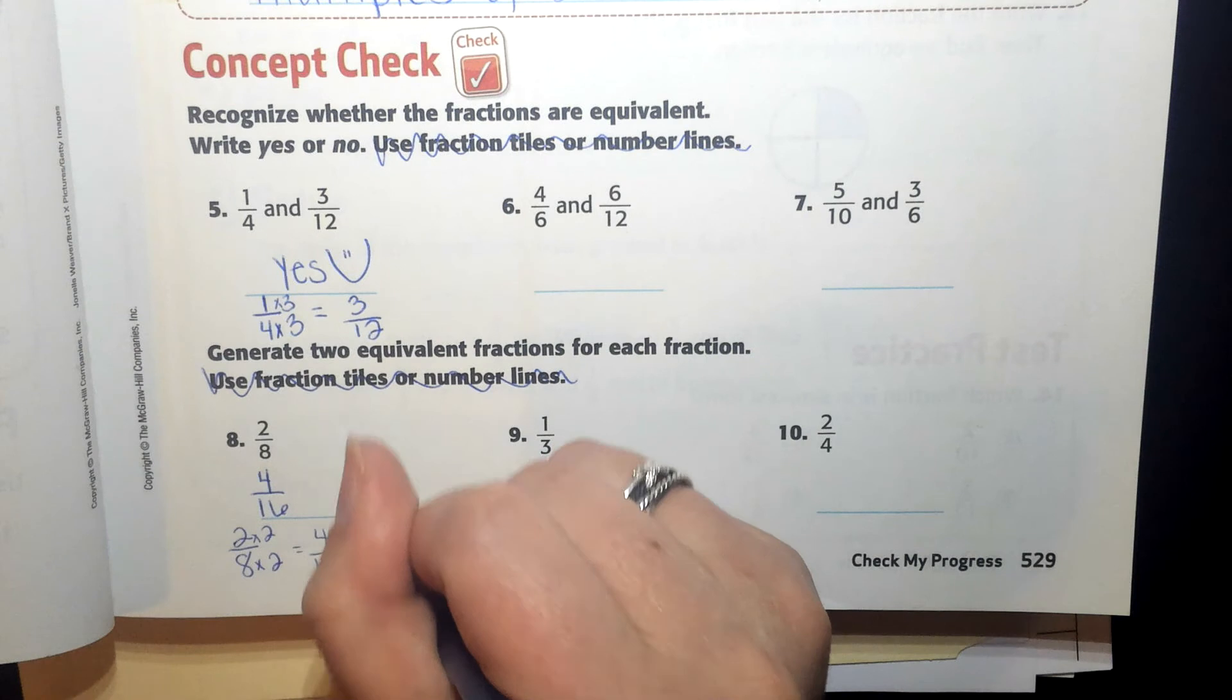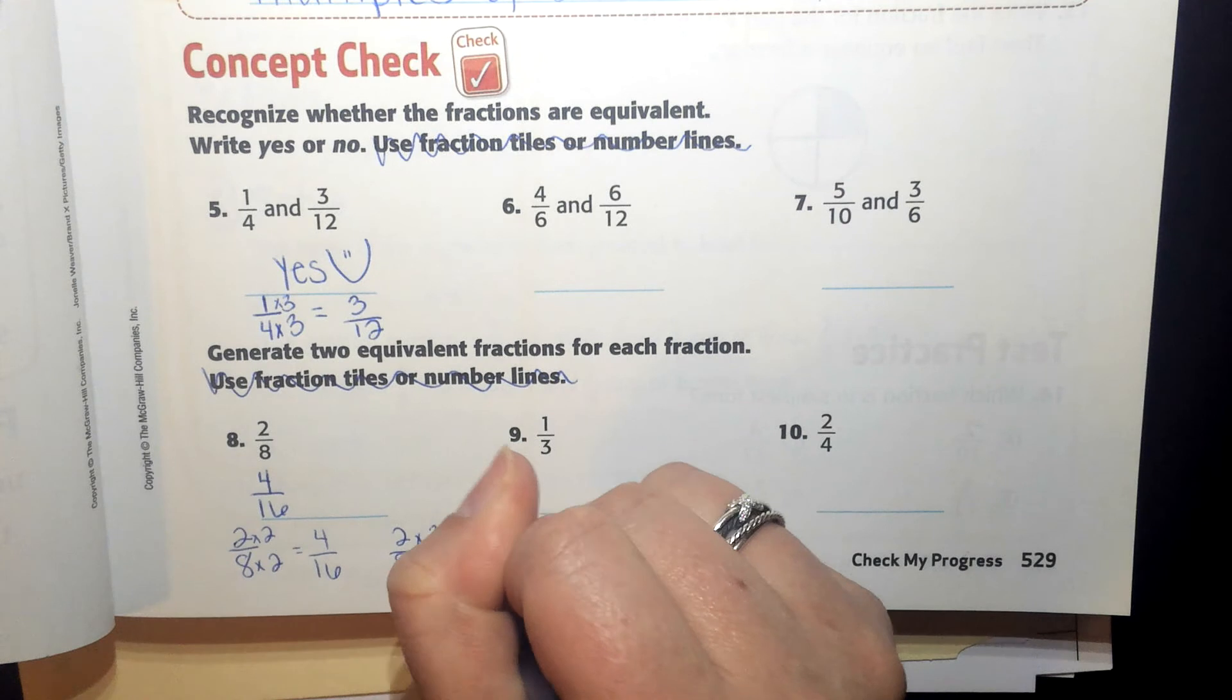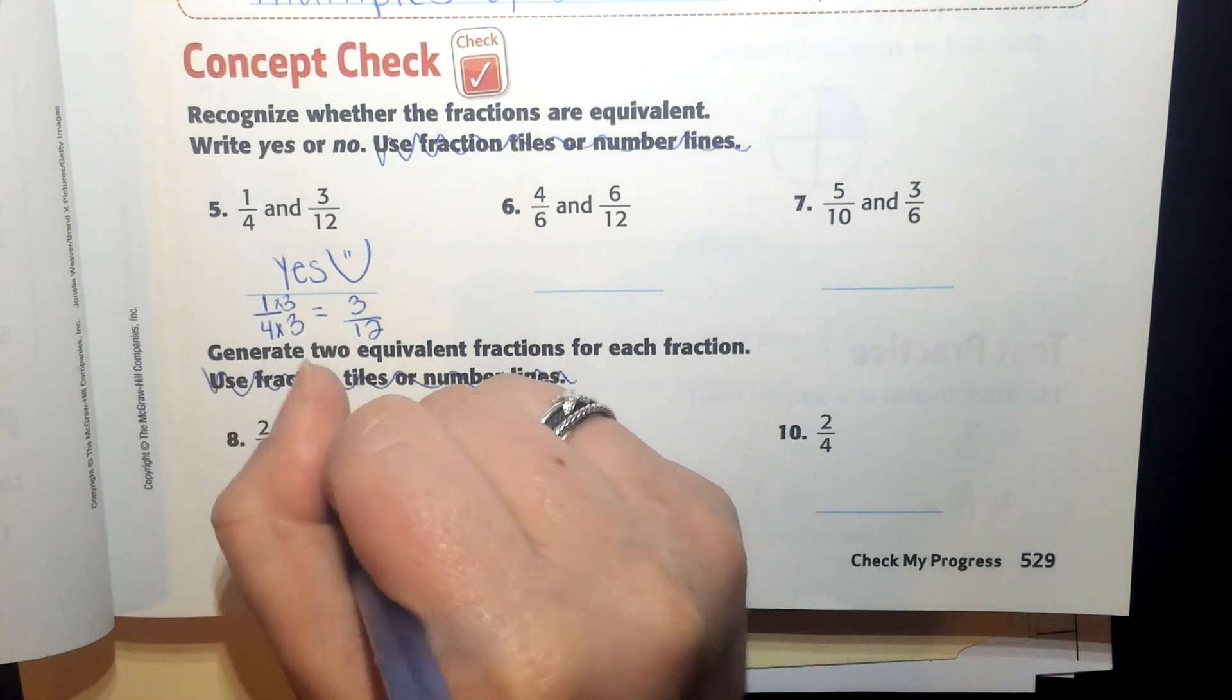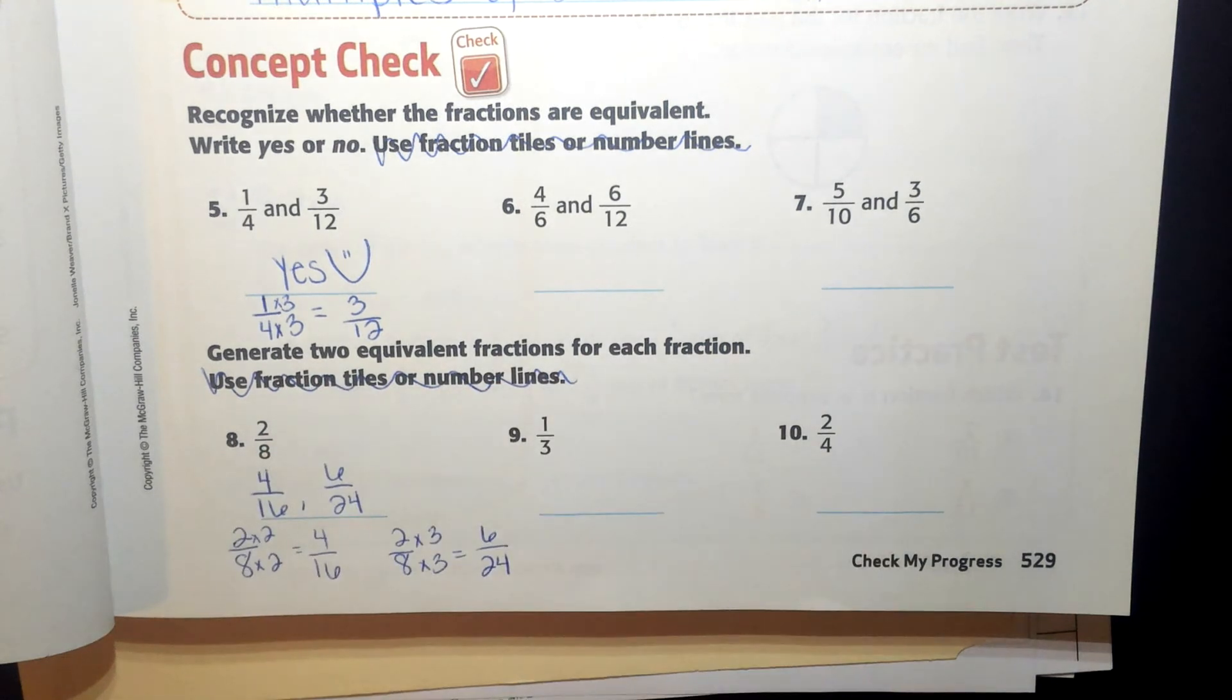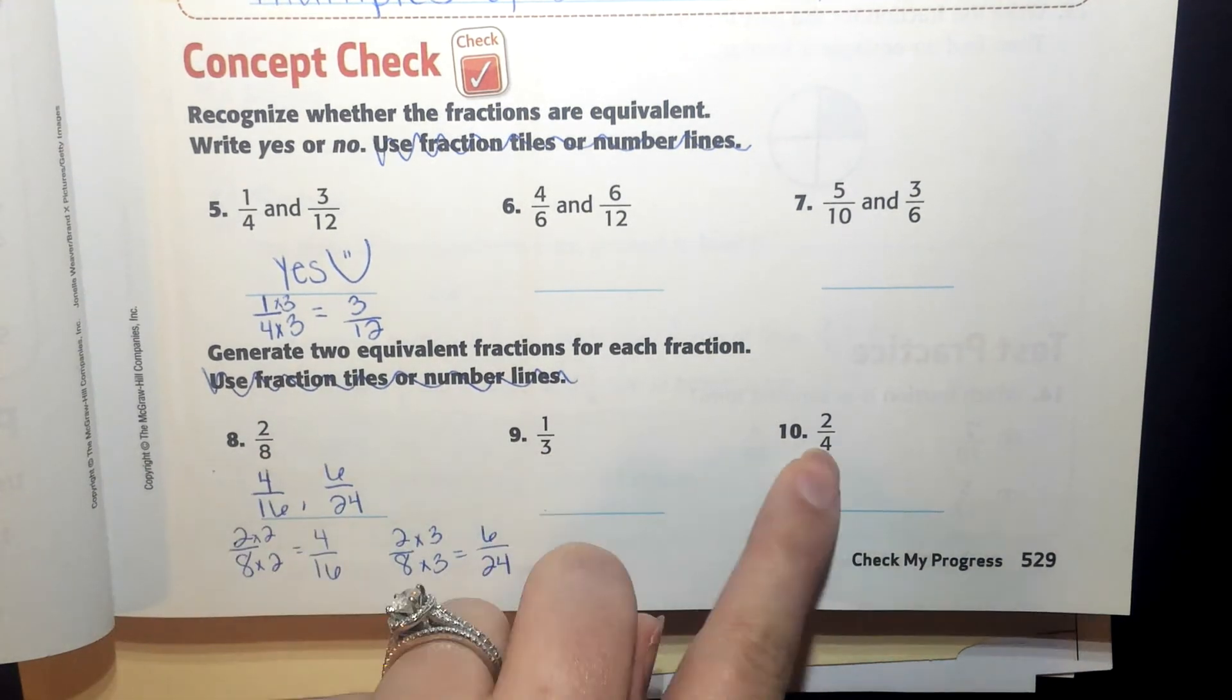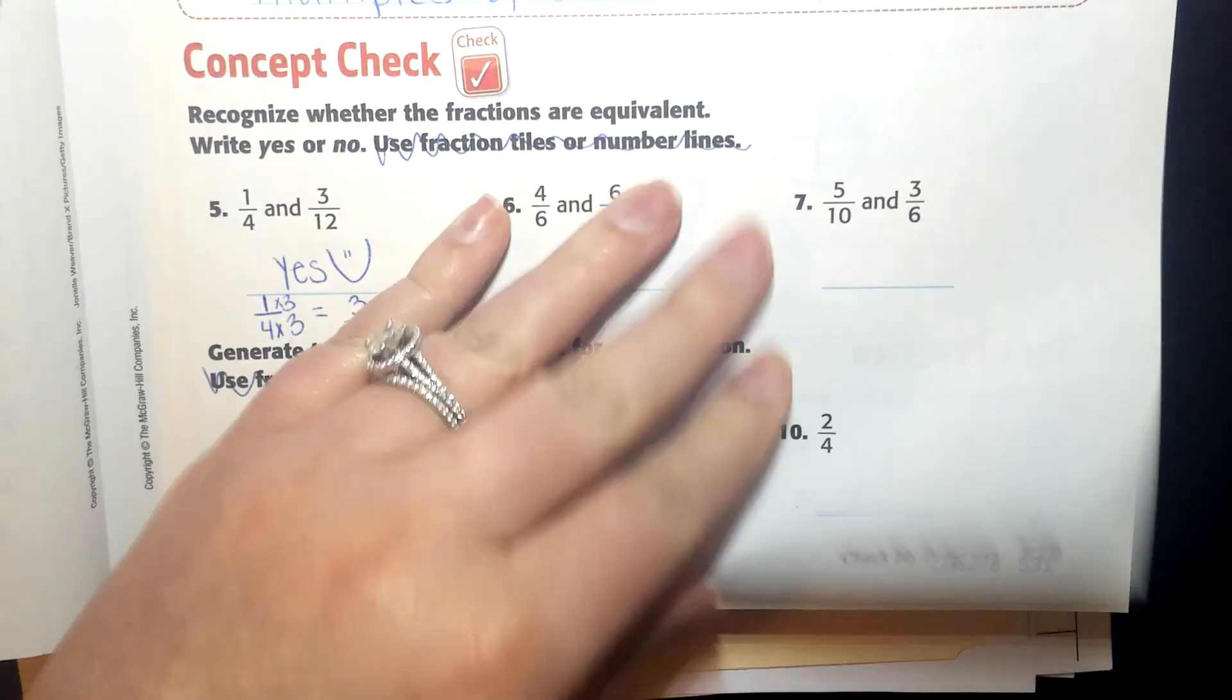And two-eighths, if I multiply the numerator and the denominator by three, it's also equivalent to six-twenty-fourths. So there's my two equivalent fractions for two-eighths. You need to do one-third and two-fourths. Don't forget, you need to have two for each.